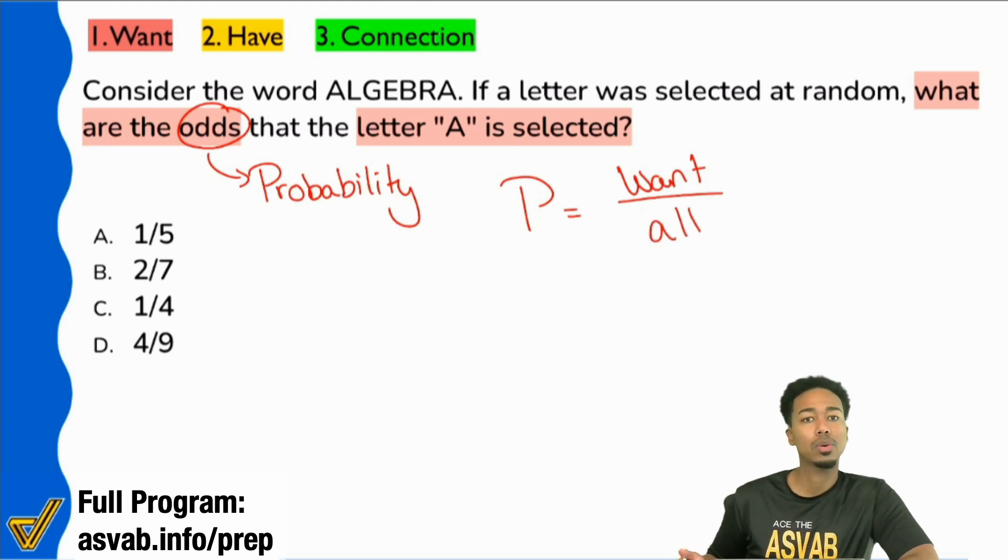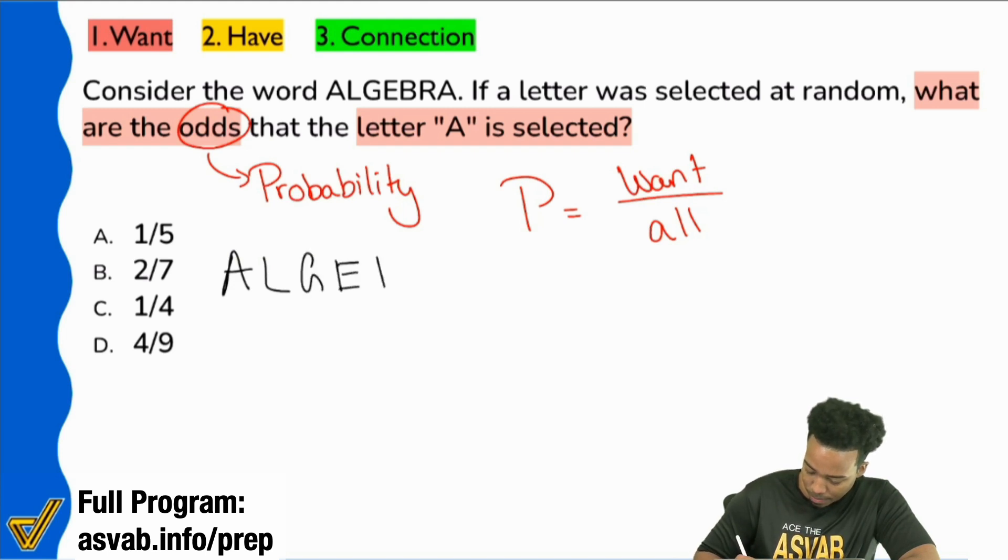So what is it that we're looking at? Consider the word ALGEBRA. If a letter was selected at random, okay great, so let's take a look at the letters in the word ALGEBRA. We have A, L, G, E, B, R, and A.